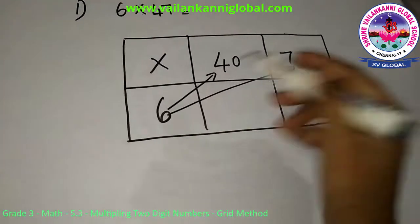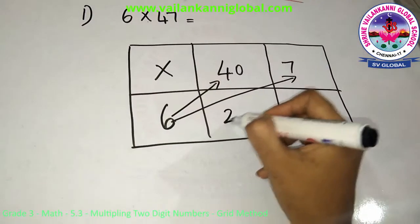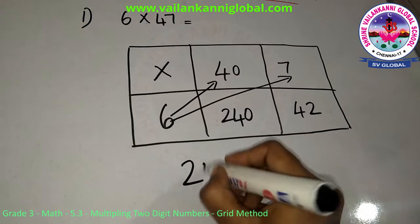And write the answer below. So 6 times 4 is 24, and I am having a 0, making it 240. 6 times 7 is 42. So later you will add 240 plus 42 which is 282, which is the answer.